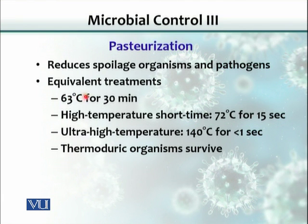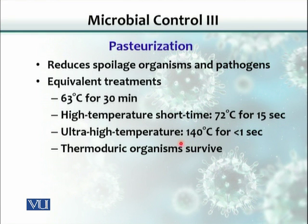Initially, Louis Pasteur used 63 degrees Celsius for 30 minutes, which eliminates most organisms. Pasteurization is not sterilization, but it targets organisms that spoil food, improving keeping quality. A higher temperature short-time method uses 72 degrees Celsius for 15 seconds. Scientists also developed ultra-high temperature pasteurization at 140 degrees Celsius for less than one second, achieving the same effect.